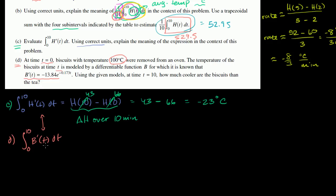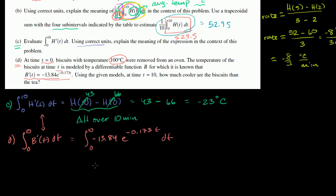This is the exact same pattern as what we saw for the tea — now we're talking about the biscuits. This is going to be the definite integral from 0 to 10 of B prime of t, which they give us as negative 13.84 times e to the negative 0.173t, dt.